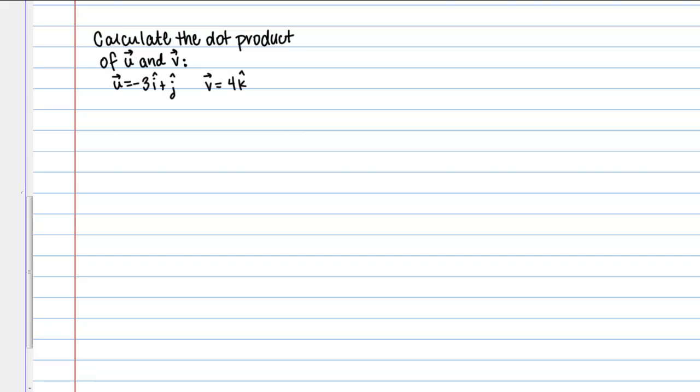Let's now work through this example. Calculate the dot product of vectors U and V. Our vector U is negative 3i plus j and vector V is 4k.